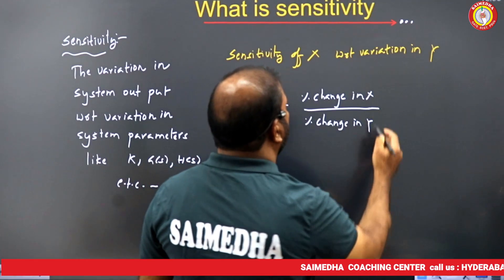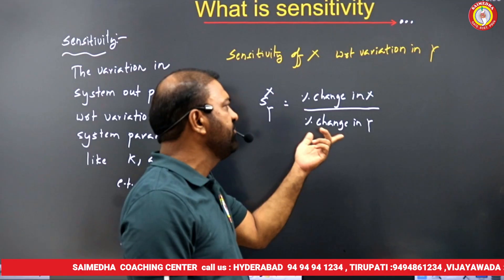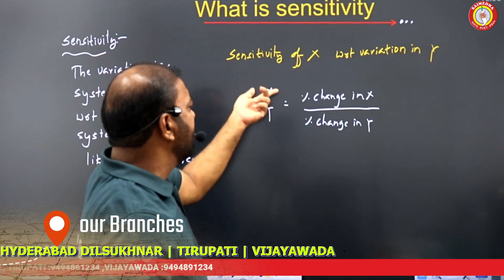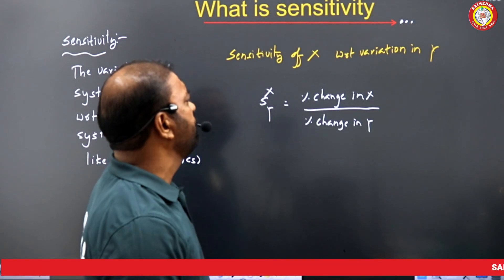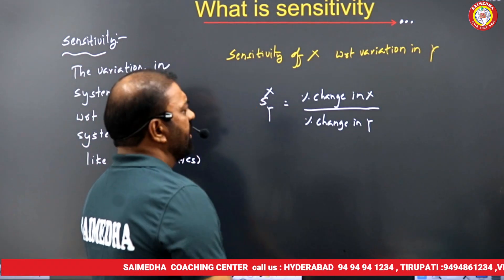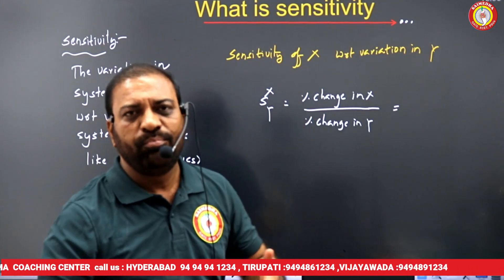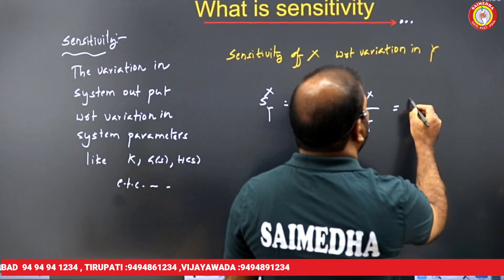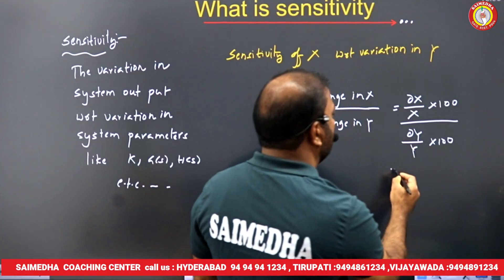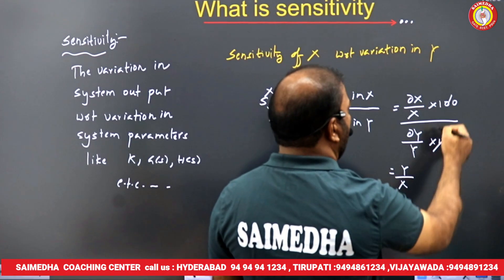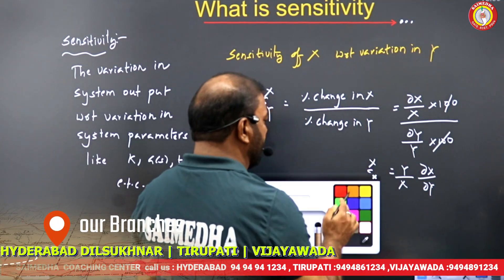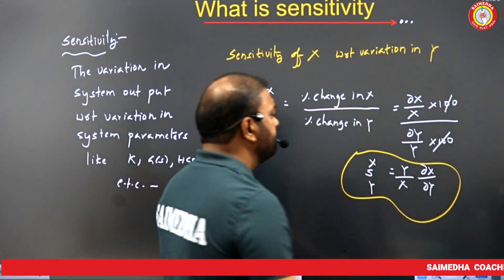So with respect to variation in Y, how much variation is happening in parameter X — that is called sensitivity of X with respect to Y. By application of differentiation, percentage change is: (∂X/X × 100) divided by (∂Y/Y × 100), which equals (Y/X) × (∂X/∂Y). So S_X^Y is simply the sensitivity of X with respect to Y.